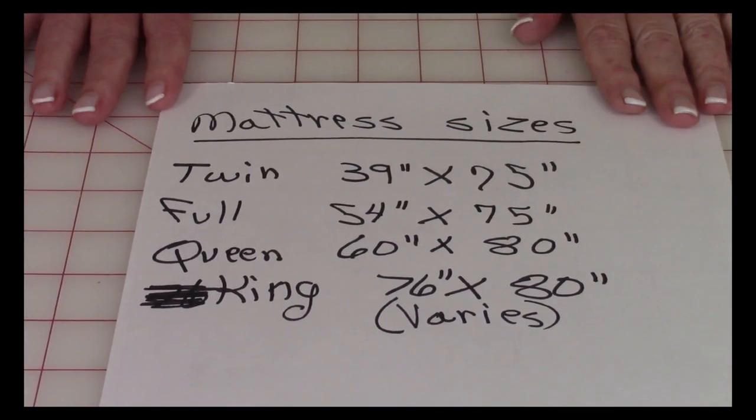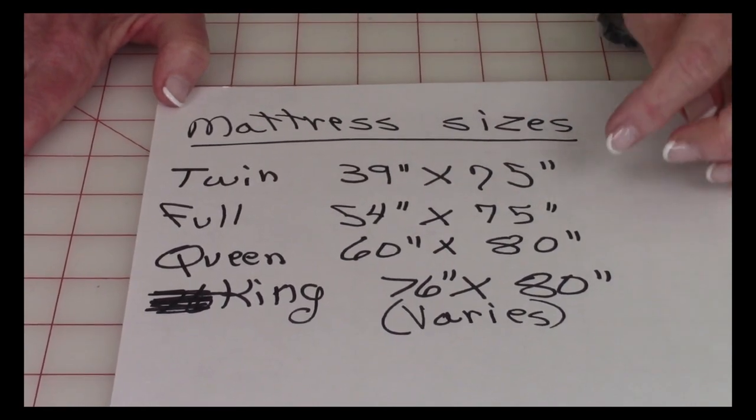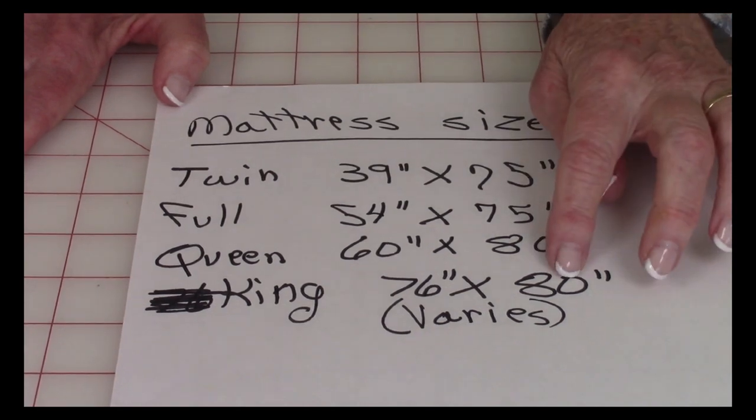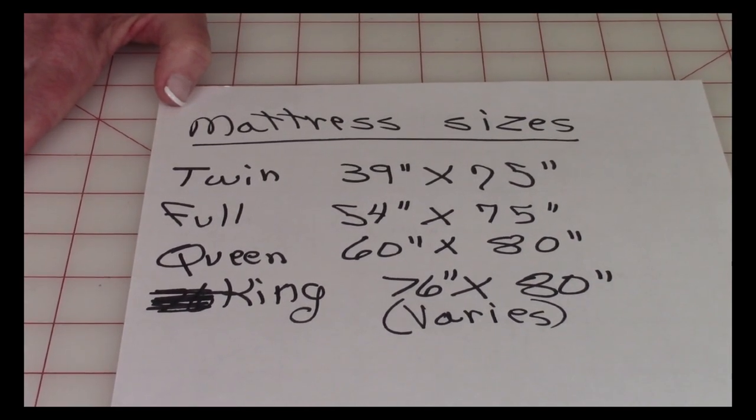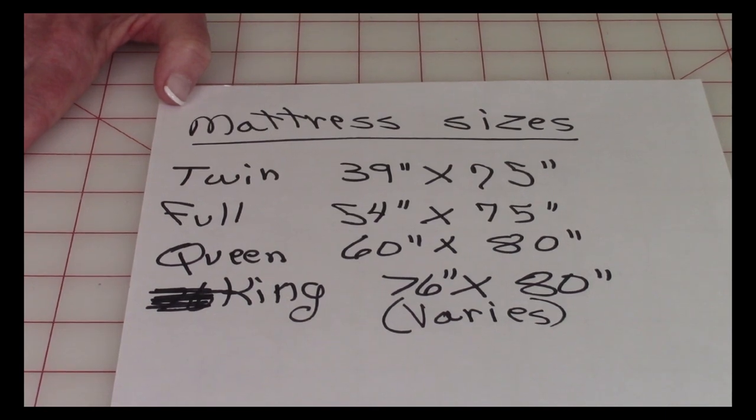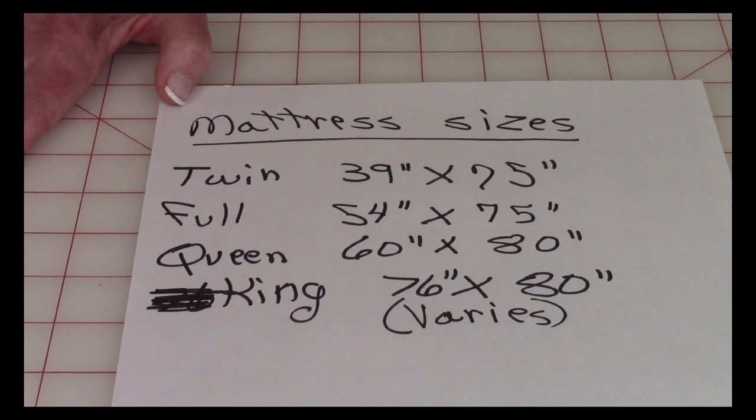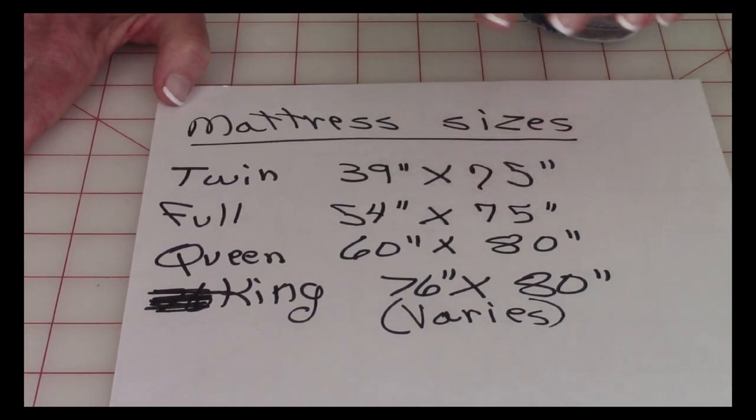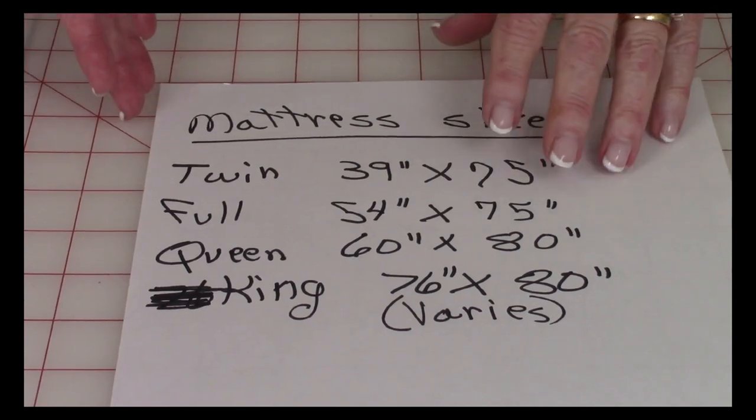Okay, now this is the sizes of mattresses that they listed on there: a twin, full queen, and king. Remember that a king size mattress varies greatly depending on if you have an eastern king or a regular king. So there are differences. Be aware. Measure your own mattress to make sure you know what you're dealing with.